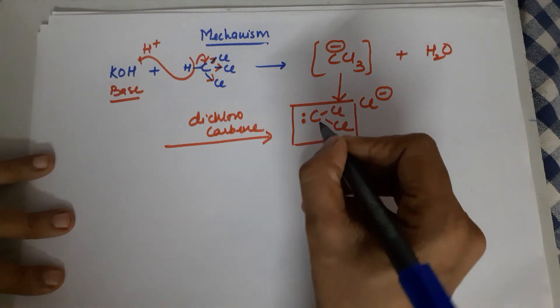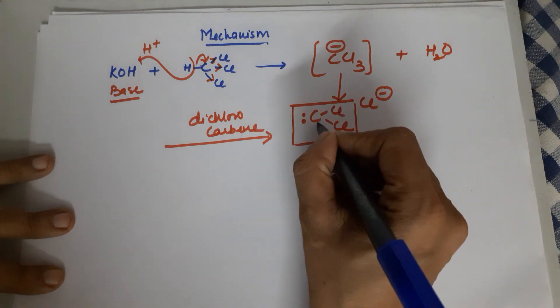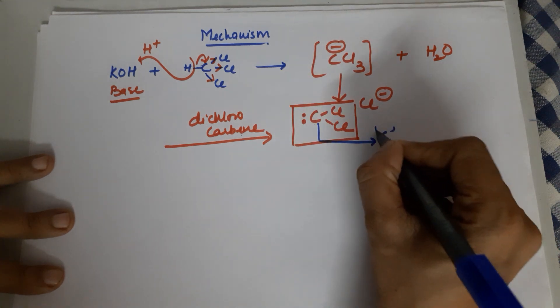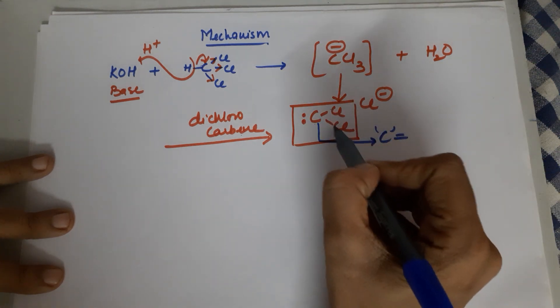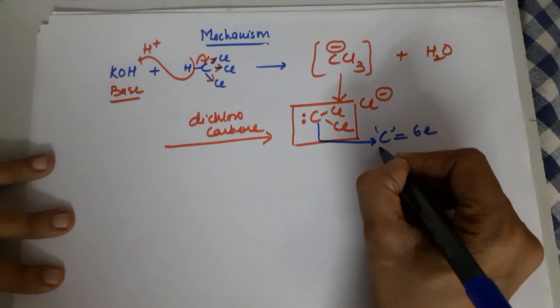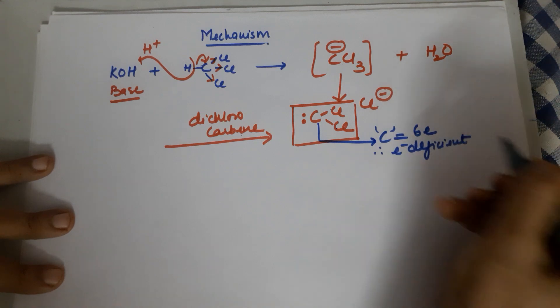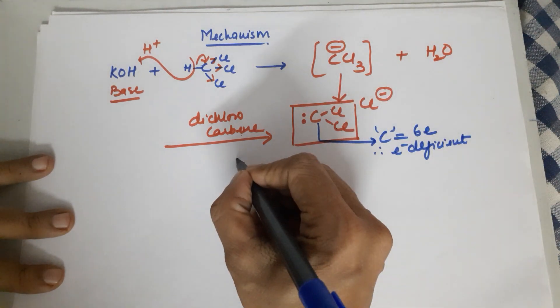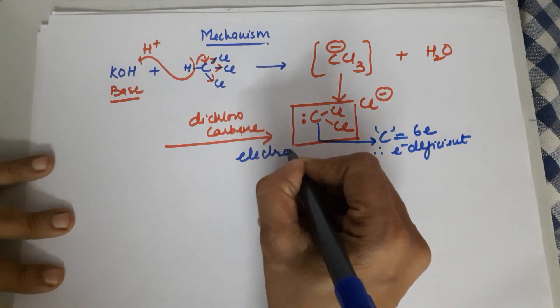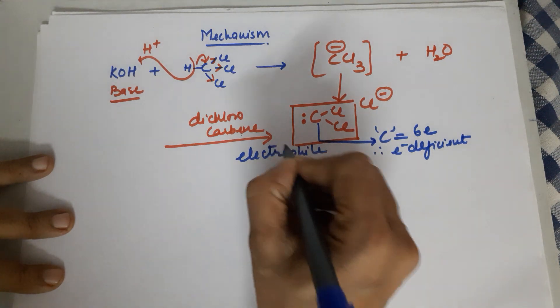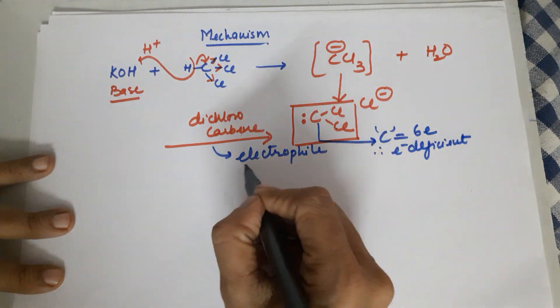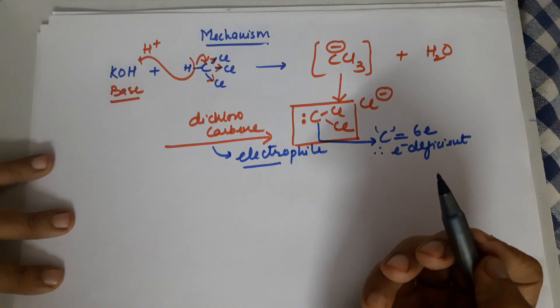This is the key intermediate in your reaction or the attacking reagent. As you can see in this particular reagent, carbon has got how many electrons? 1, 2, 3, 4, 5, 6, has got 6 electrons. Therefore it is electron deficient. Therefore it is an electrophile. So your dichlorocarbene is an electrophile generated in this particular reaction.